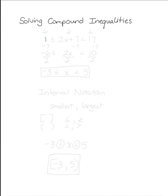Like for example, 1 is less than or equal to 2x plus 7, which is less than 17. You still want to solve for the variable, which is x in this case, but this is like a three-sided equation so you have to do whatever you're going to do to all three sides of this inequality.